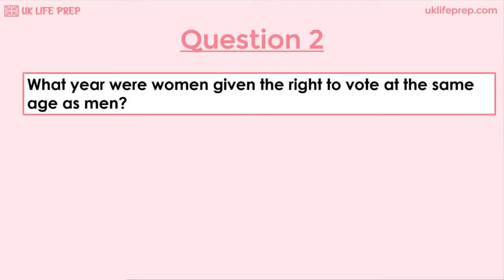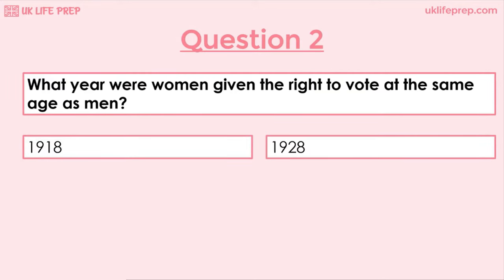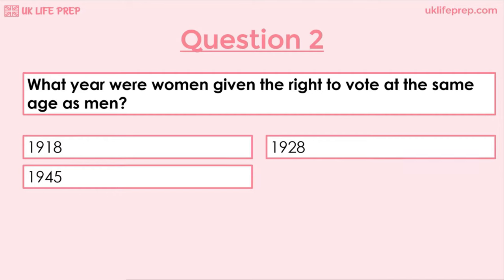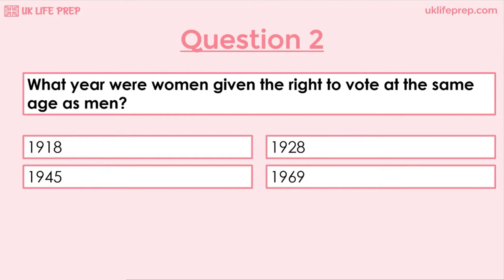Question 2: What year were women given the right to vote at the same age as men? 1918, 1928, 1945 or 1969? The correct answer is 1928. 1918 was the first year women were granted the ability to vote at the age of 30, where men could vote at 21. And in 1969, men and women could both vote at the age of 18. 1945 has no significance for the voting age.